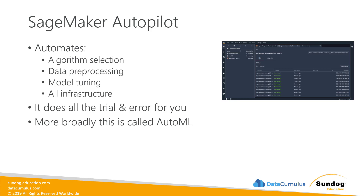Another piece of SageMaker Studio is SageMaker Autopilot, which is basically AutoML in action. A lot of machine learning and AI is just trial and error — there's no rhyme or reason to it. It's just a matter of throwing a bunch of spaghetti on the wall and seeing what sticks in terms of what model performs best and what hyperparameters work best for a given model. SageMaker Autopilot automates that for you. It will automatically try different algorithms, see which one works best with your data, automate data preprocessing, and handle hyperparameter tuning along with all the infrastructure involved.